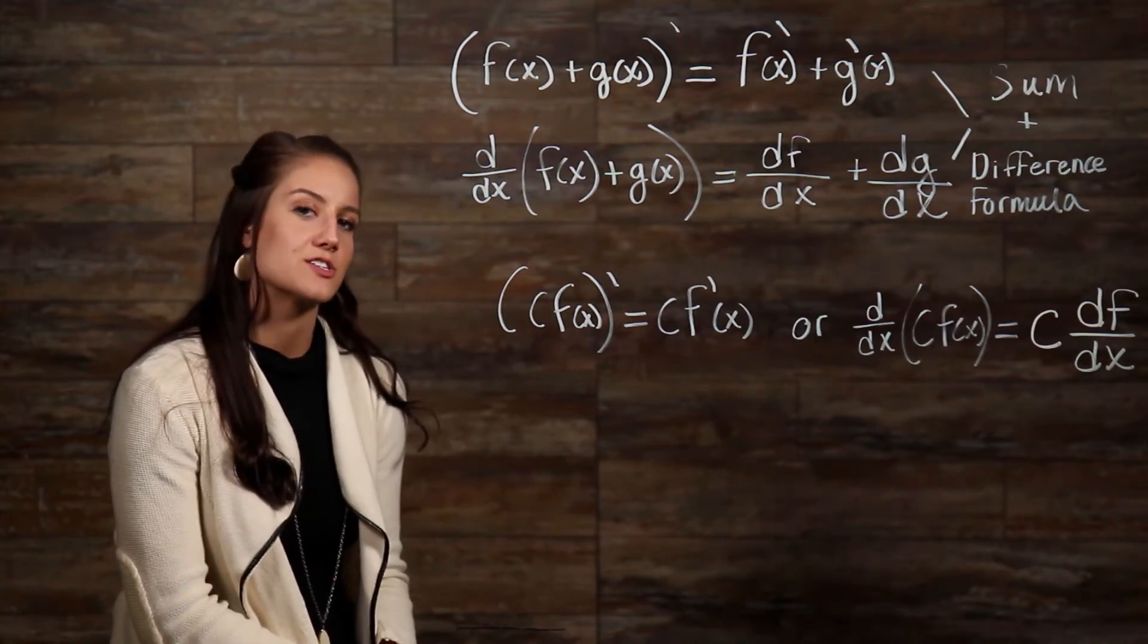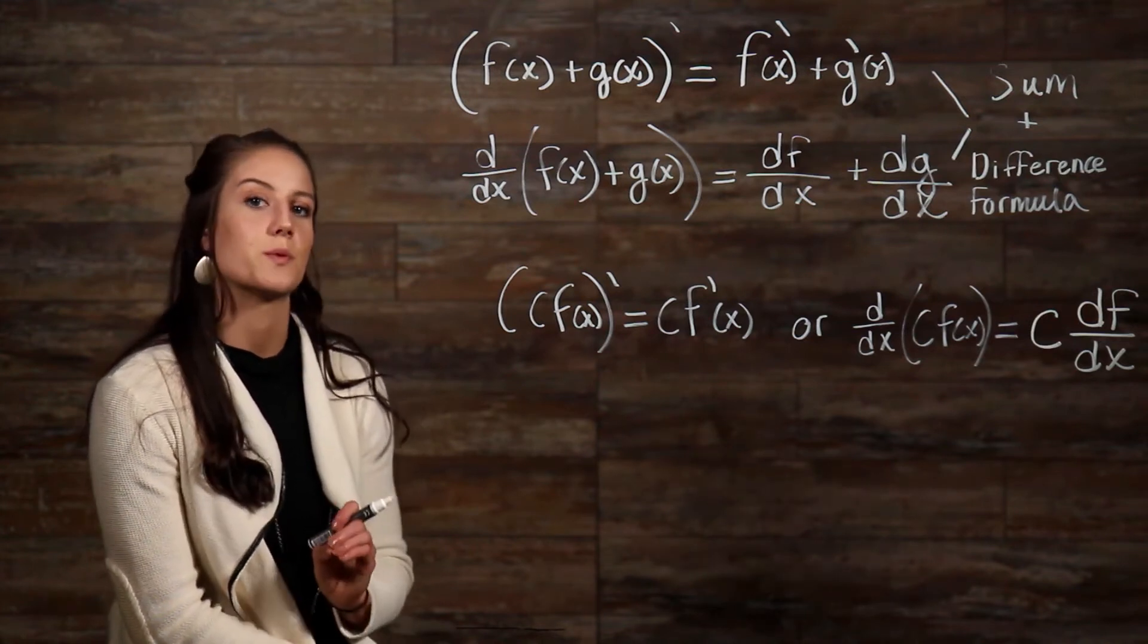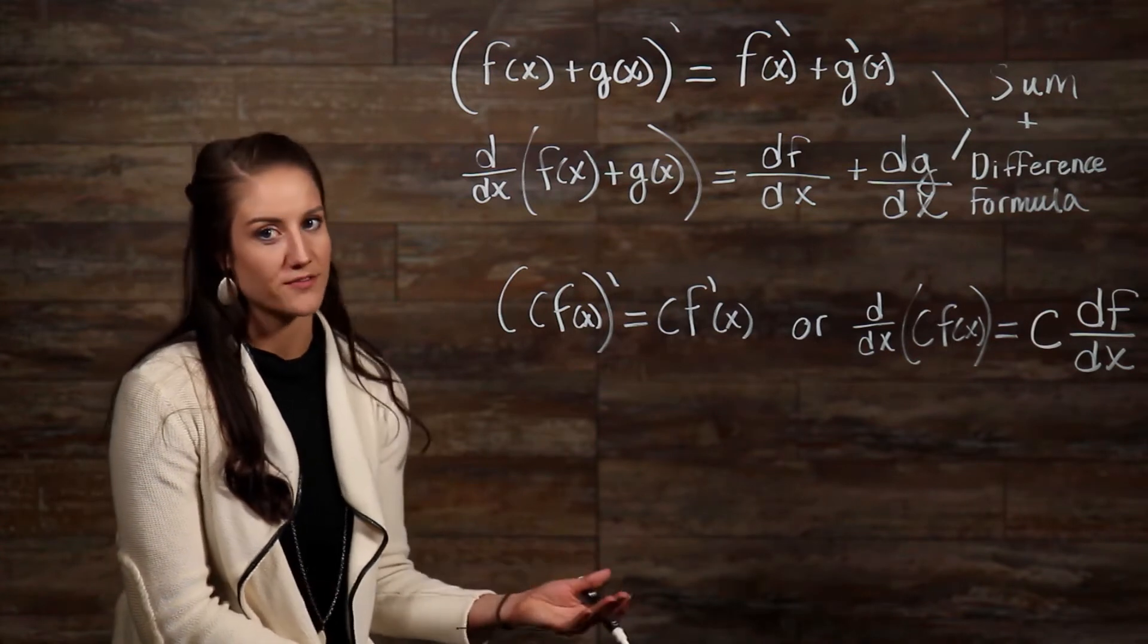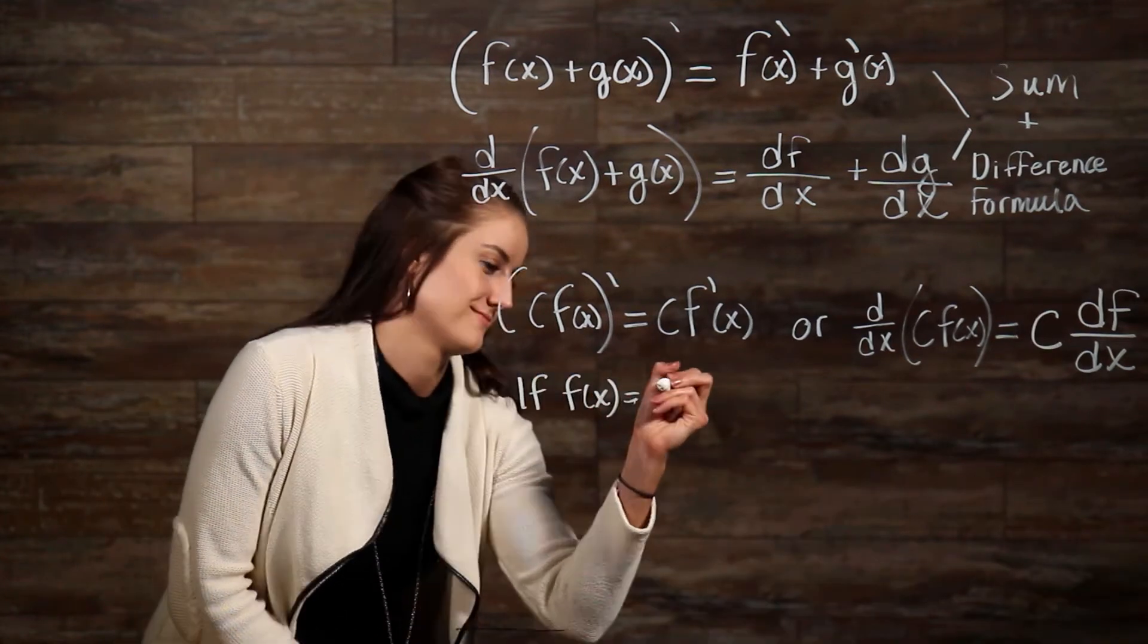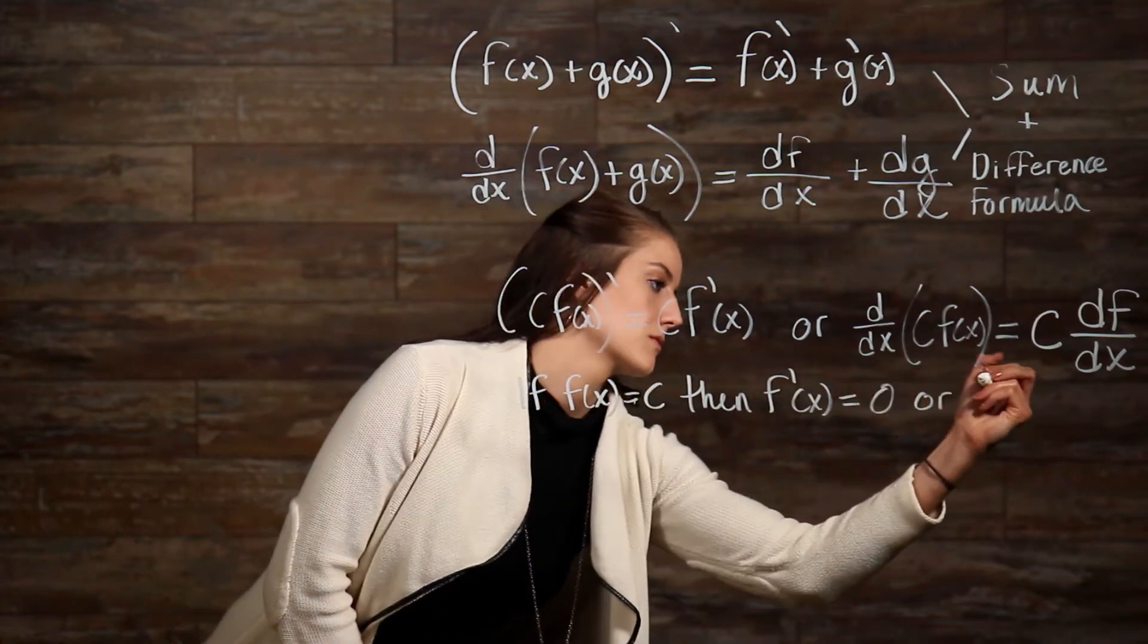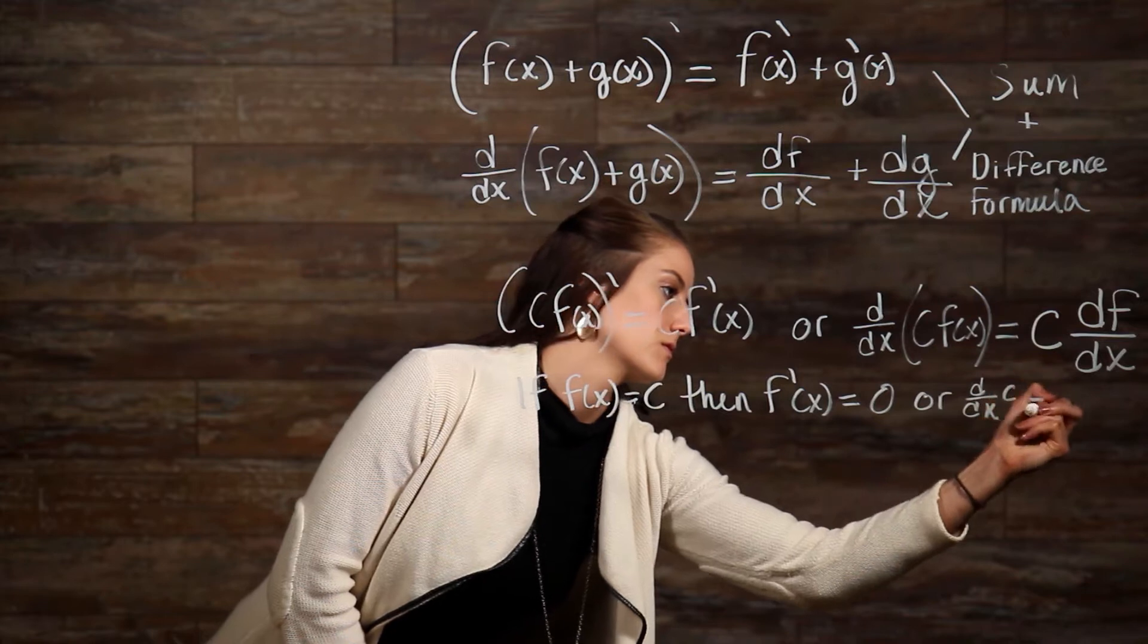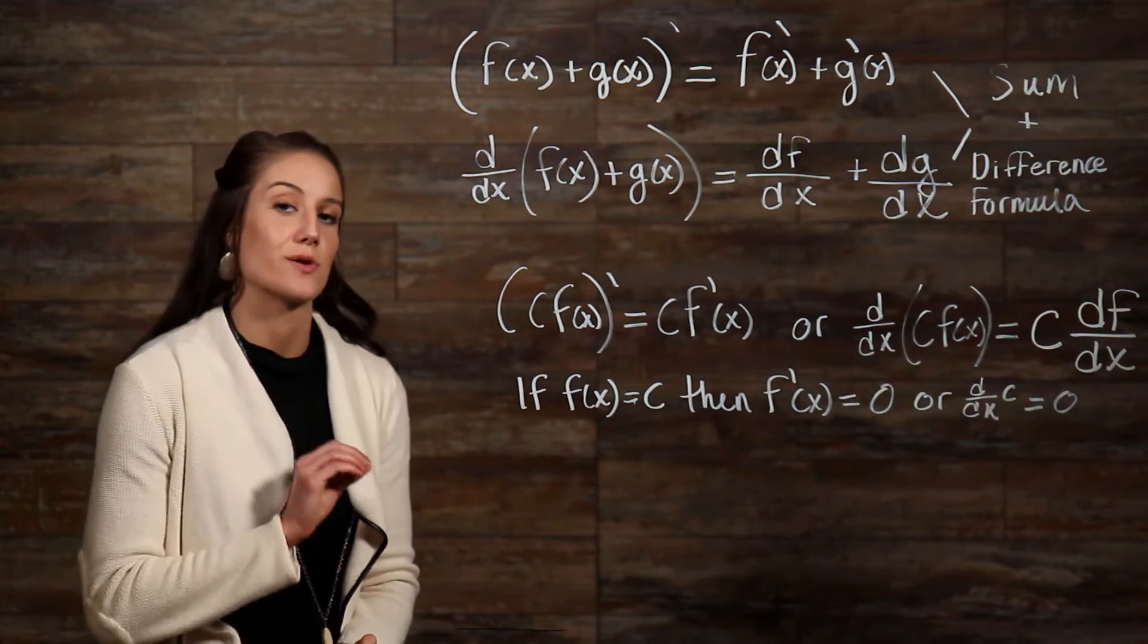Now, before we go on to look at some examples of these properties being applied, I must first equip you with some derivative formulas so that you can actually find the derivative. Here's the first one. This formula shows us that the derivative of any constant is just zero.